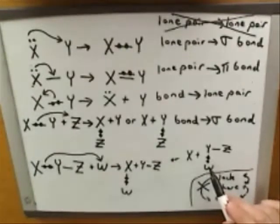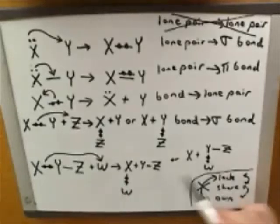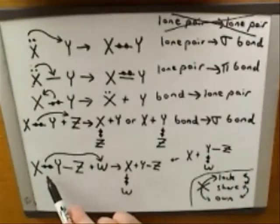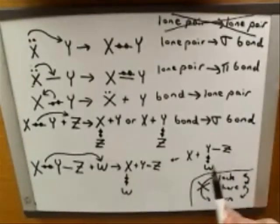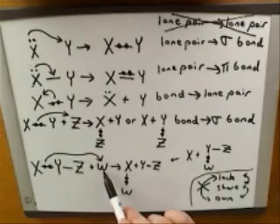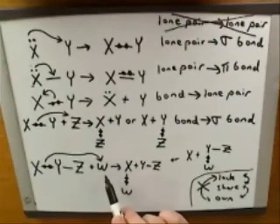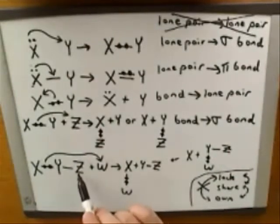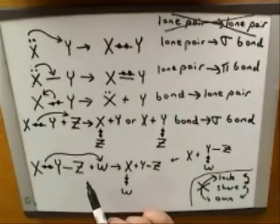So here's the other possible set of products. It's possible that W is going to end up sharing the electrons not with X, but with Y, because Y was the other atom that was originally sharing the electrons. The arrow is ambiguous — we can't tell which of these products we're going to get. Is it possible that W could end up bonded to Z? No, it cannot, because Z was not one of the atoms that was originally sharing the electrons.